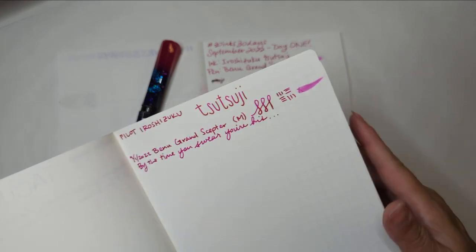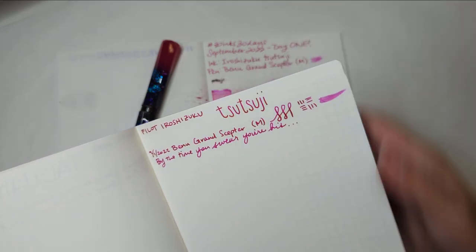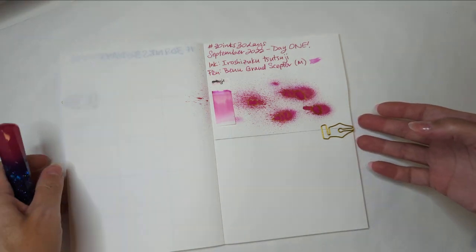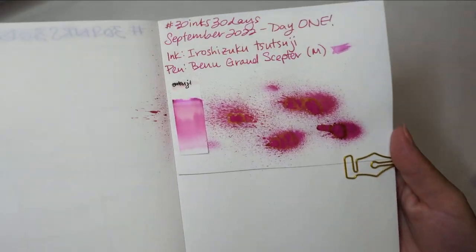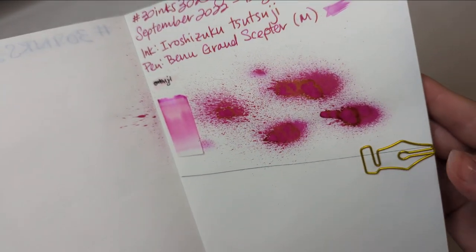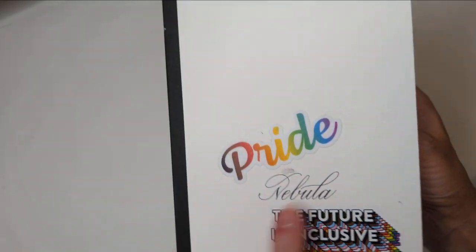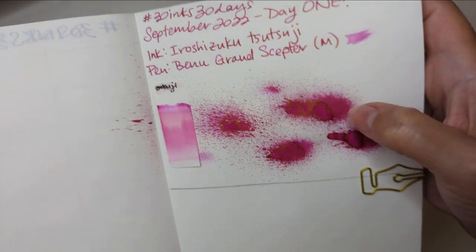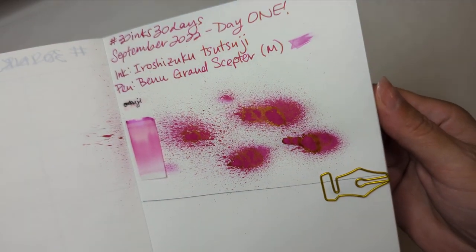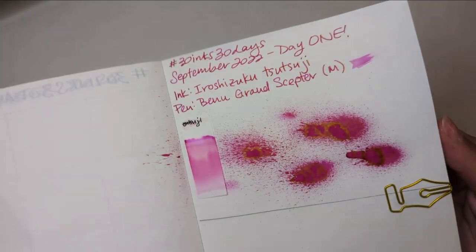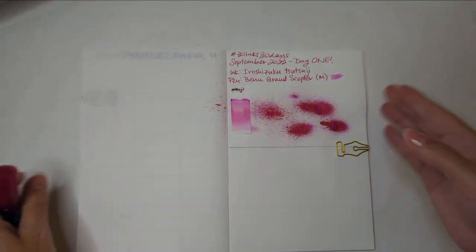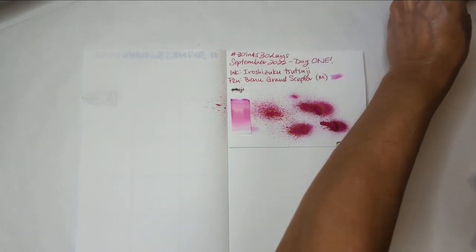This is a Cosmo Air Light. You can see the gold sheen on here, and if we look at the Tomoe River paper here in this nebula note, you can really see that gold sheen in these splats. That is yesterday's business, and that was in my new grand supper.